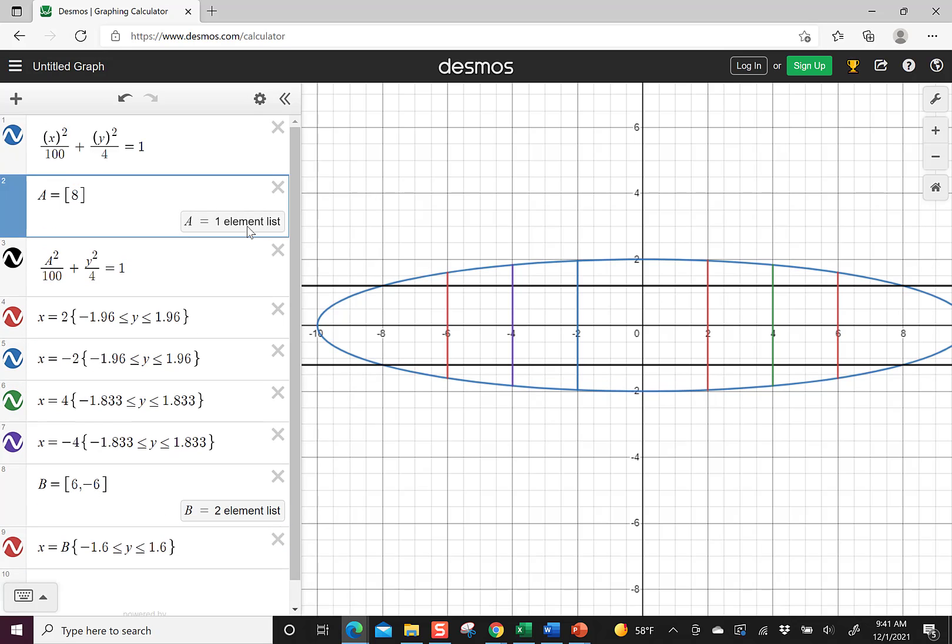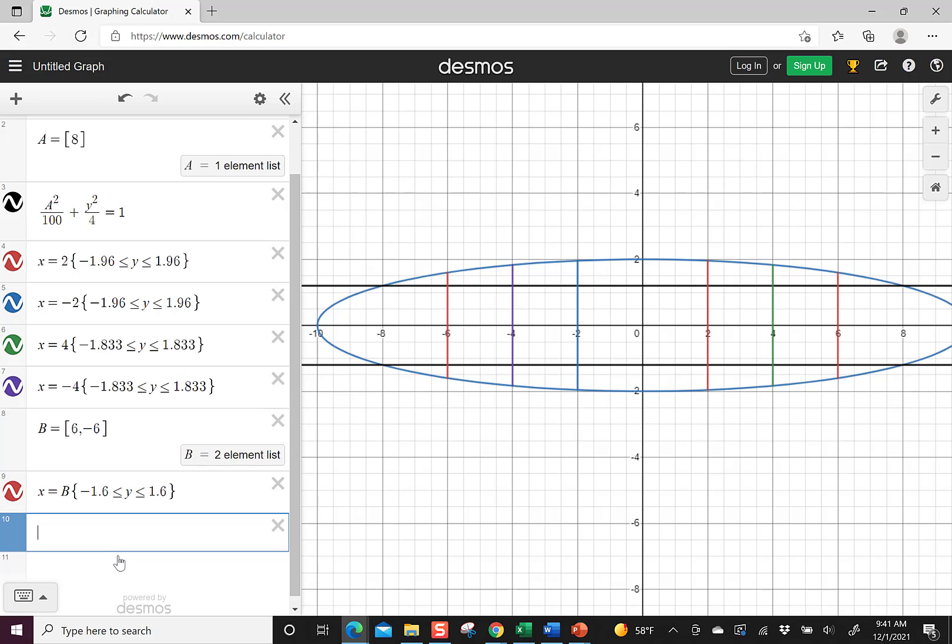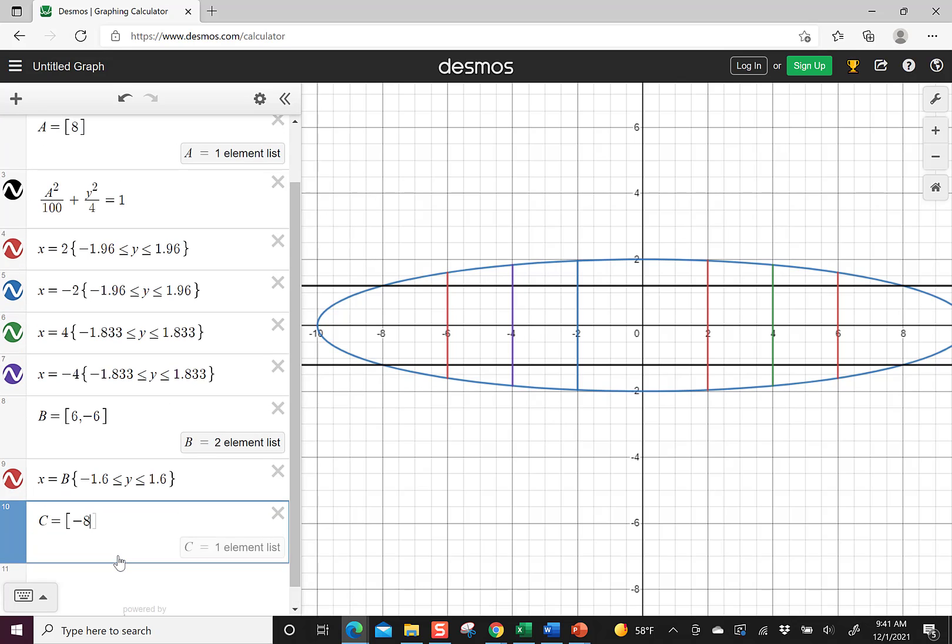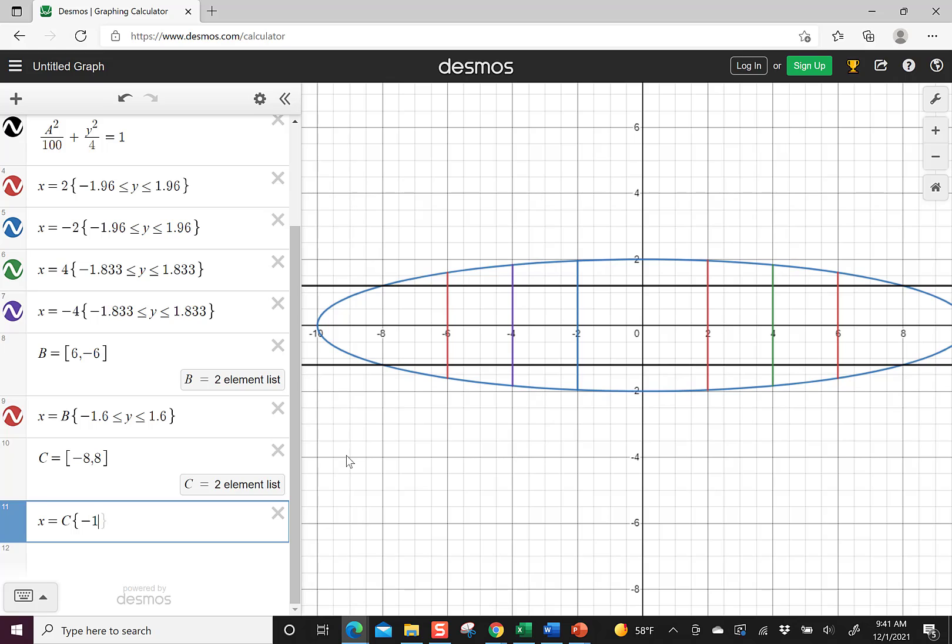So you can see I only have the 8 left. Let's repeat that using a list. So first I'm going to say 8 is at 1.2. So I'm going to say c is equal to, I'm going to do minus 8 and positive 8. And then I can say x is equal to c. And then our condition was negative 1.2 less than or equal to y less than or equal to 1.2.